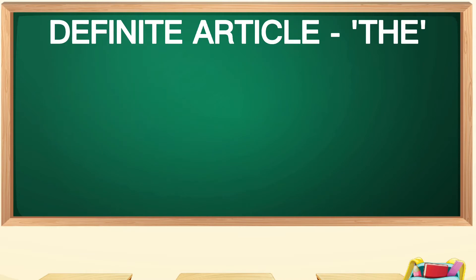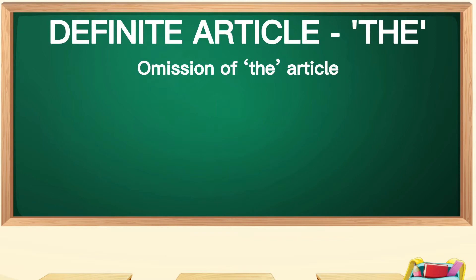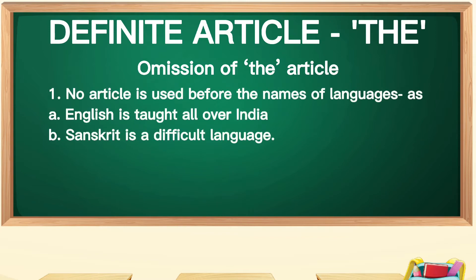So 'the' is used for all the above points. Now I would like to tell you when no articles are used — zero articles, or omission of articles. Note the important points. The first case: no article is used before the names of languages. For example: 'English is taught all over India.' 'Sanskrit is a difficult language.' You are not going to say 'the English' or 'the Sanskrit' — in general, just 'English'.